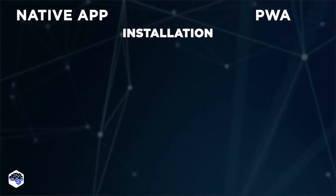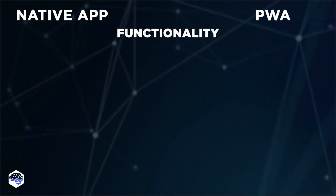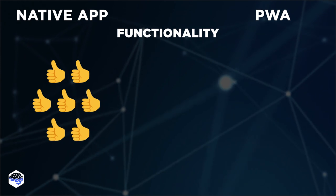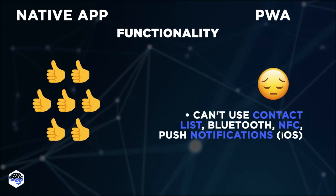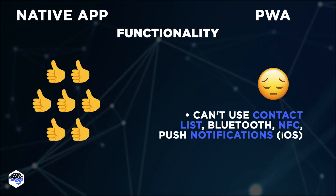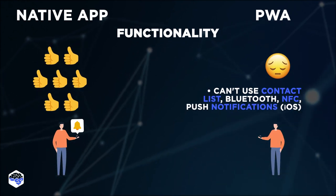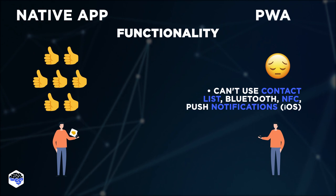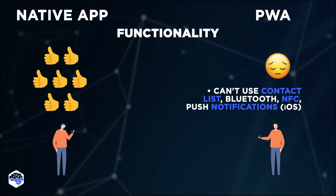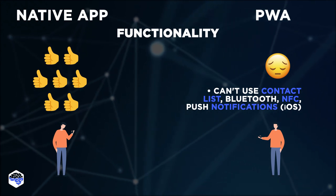Now it's time to turn the table and talk about functionality — this is where native apps take the lead. PWAs, for now, cannot use your contacts, support Bluetooth and NFC. And if we're talking about iOS, even push notifications are not available to them. These are important features that greatly improve the experience of using the app.